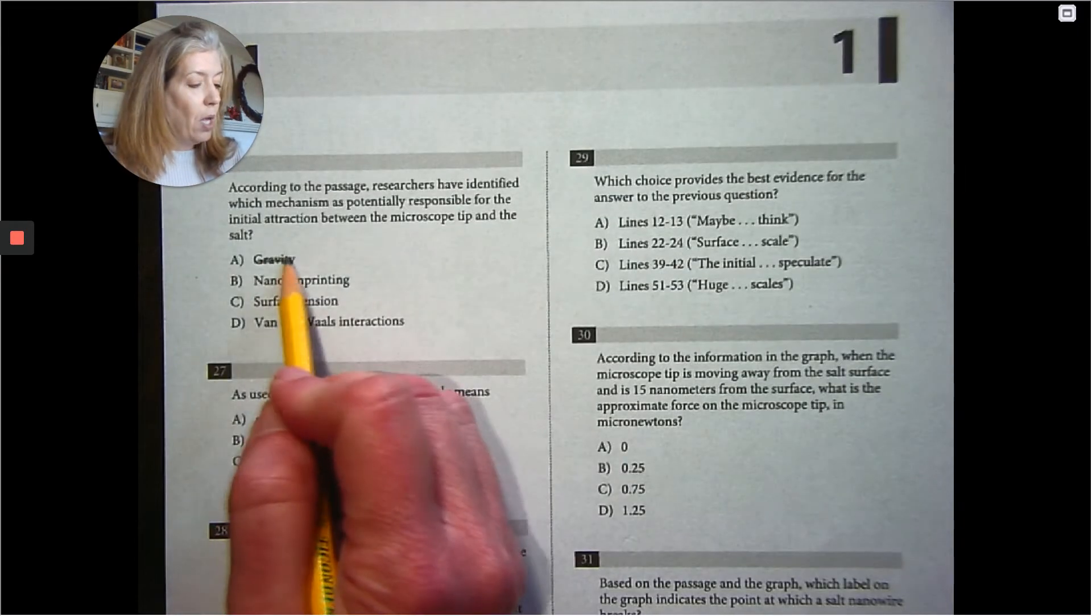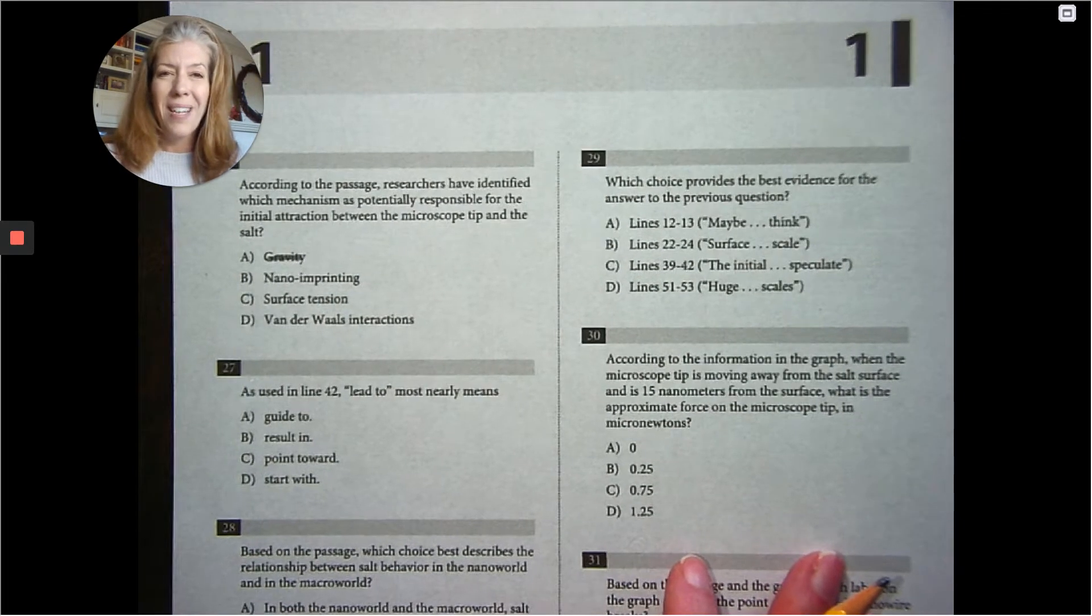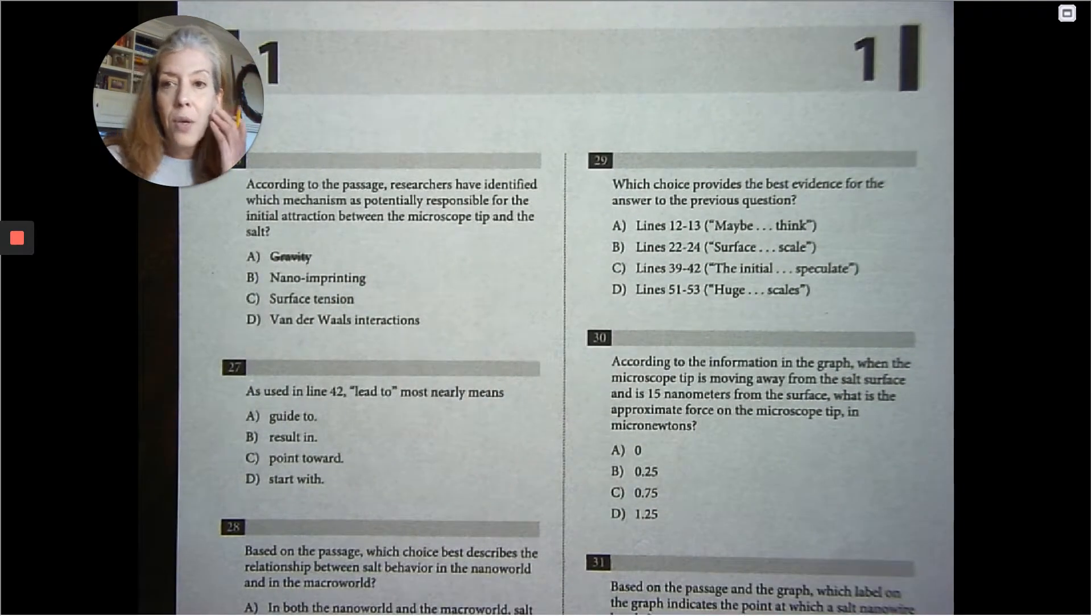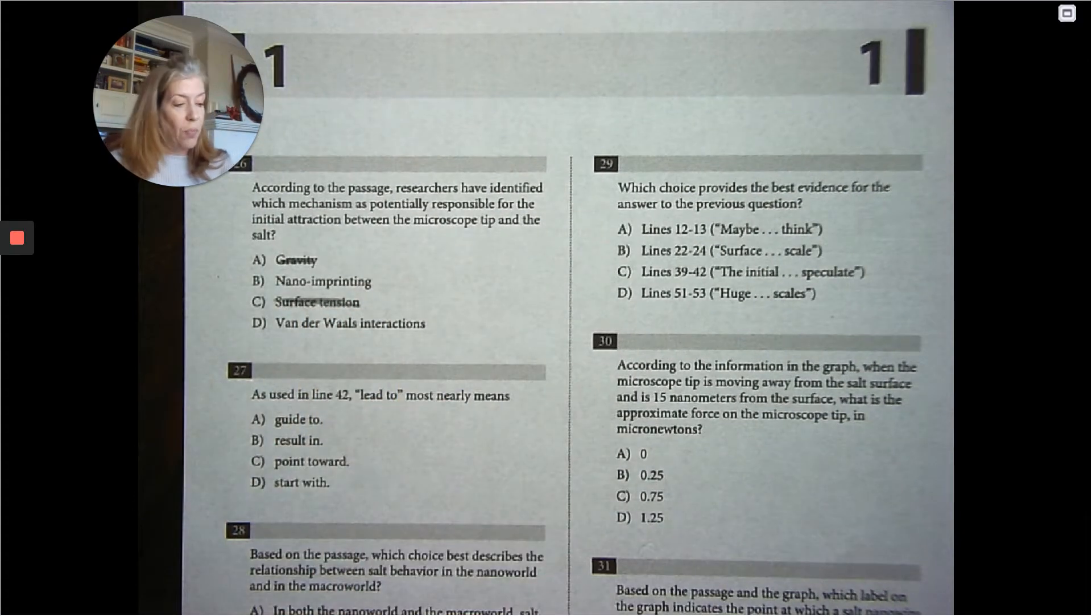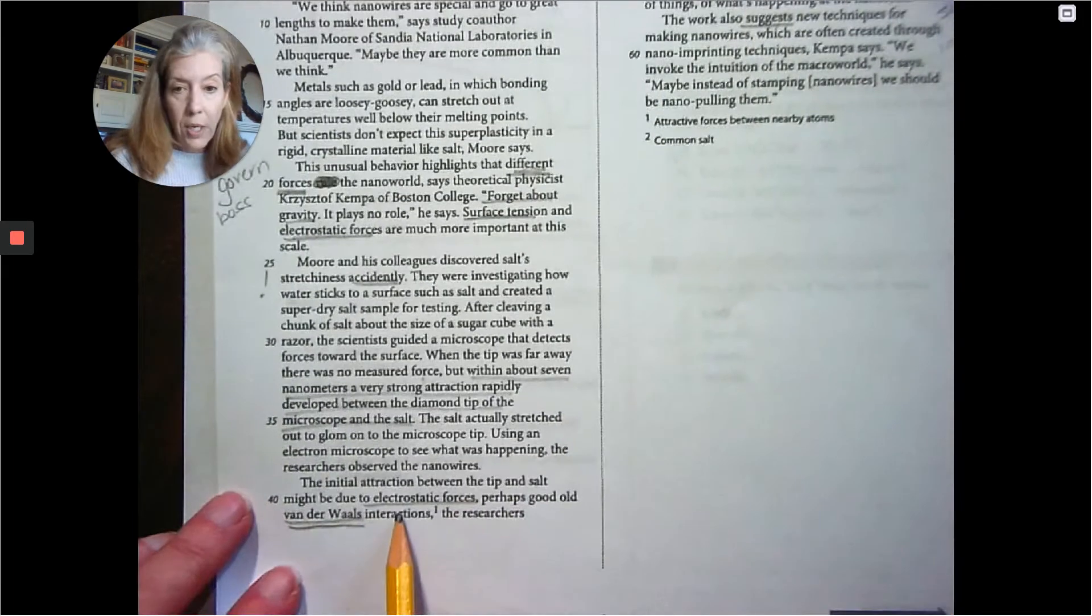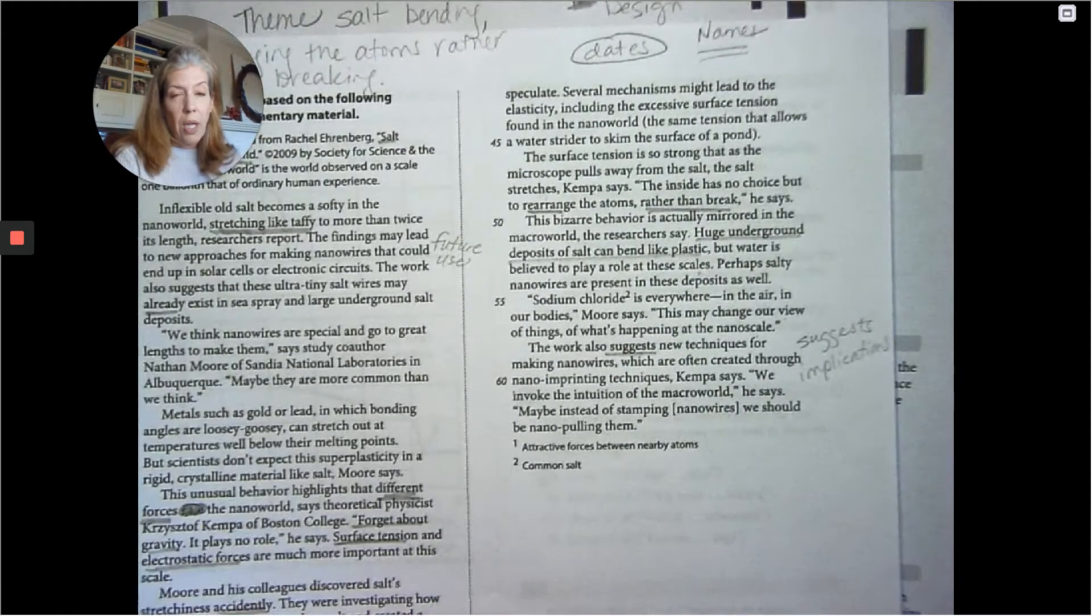Was it gravity? No. Was it nano imprinting? I got to check back. I want to say no, but I'm not going to get rid of it. It was not surface tension. VanderWaal's interactions. So between nano imprinting and VanderWaal's. It's right here. Perhaps good old VanderWaal's interactions. That's the answer. D.